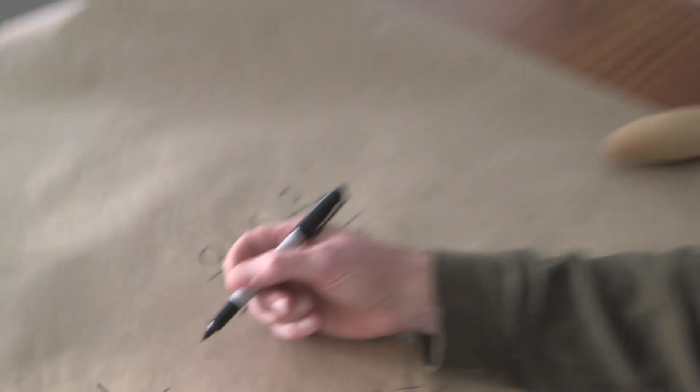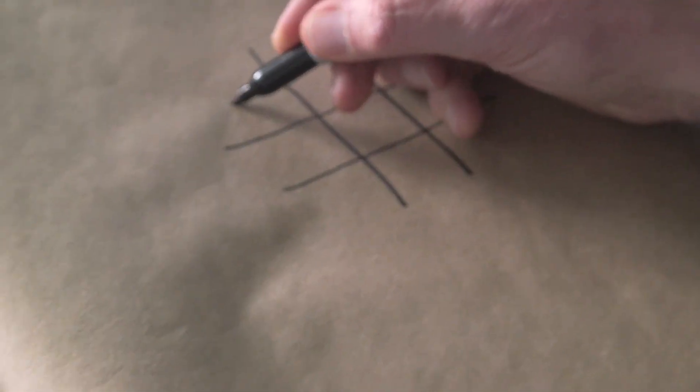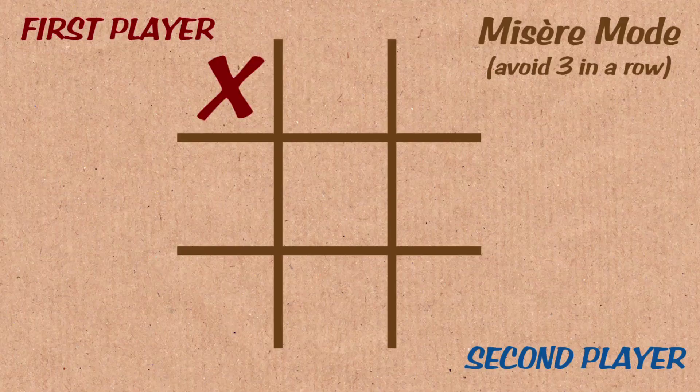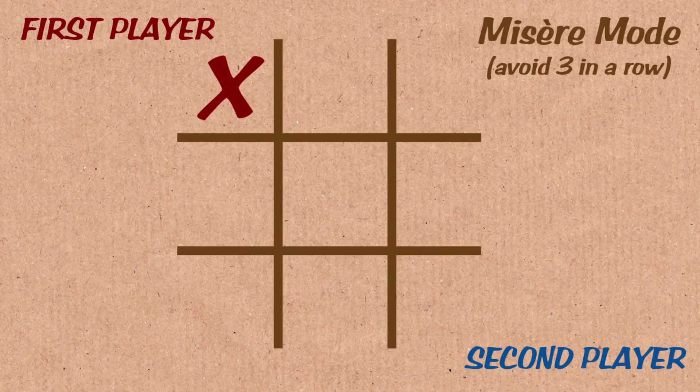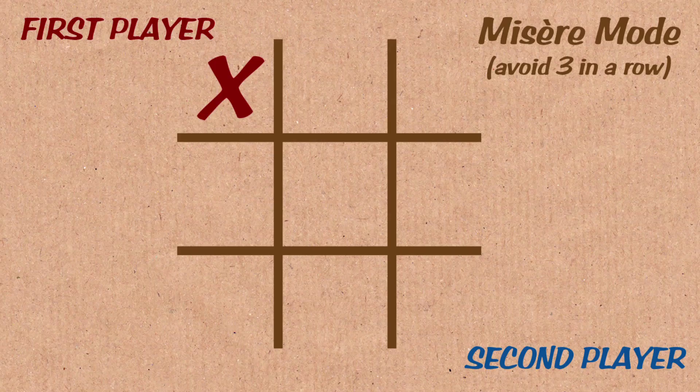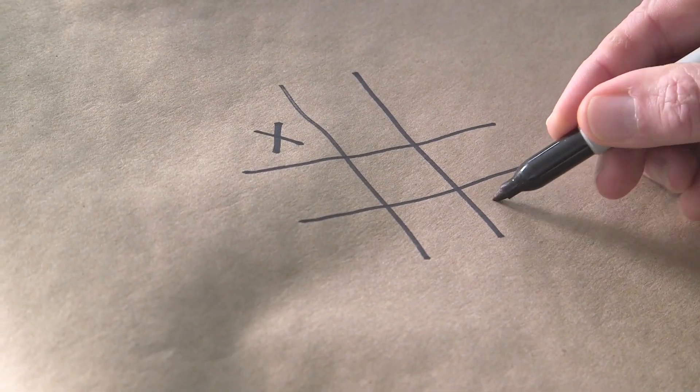So let's say, for example, that someone takes a move in the corner. Moving in the corner is not the move you want to make in this misere game. So why is that? Okay, so let's say I move in the corner. What is a good response to this? Well, what you want to do is move in the opposite corner.